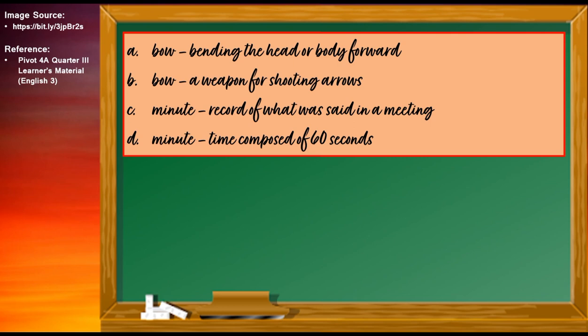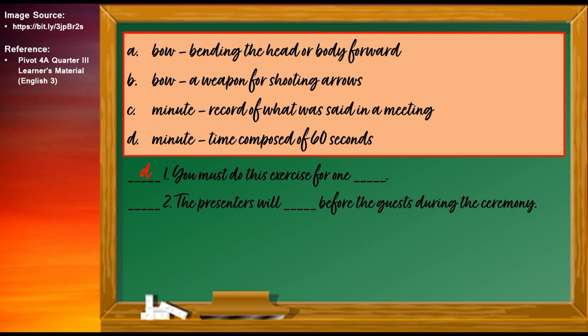Number one: You must do this exercise for one blank. The correct answer is LETTER D: You must do this exercise for one minute. The word MINUTE means time composed of 60 seconds. Number two: The presenters will blank before the guests during the ceremony. The correct answer is LETTER A: The presenters will bow before the guests during the ceremony. The word BOW means bending the head or body forward.